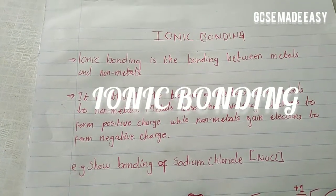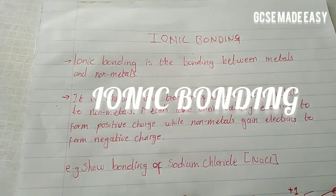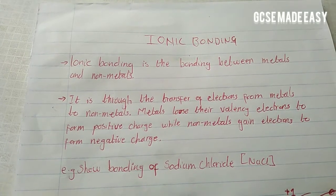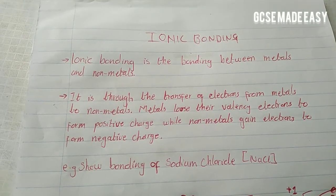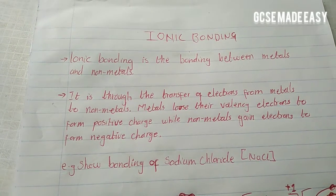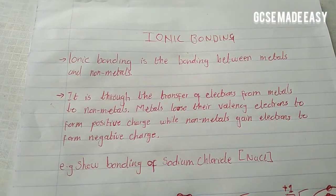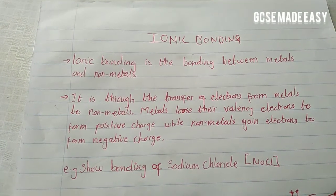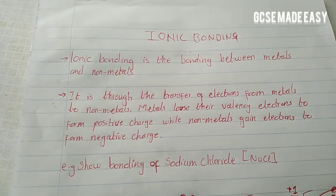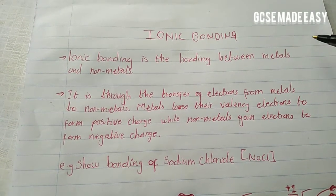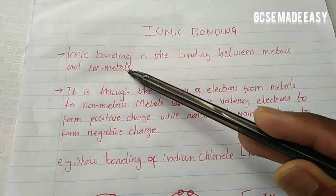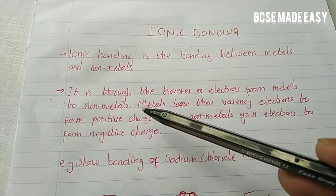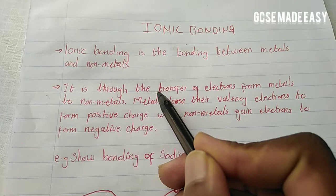Hello guys, today I want to touch on ionic bonding, which is another type of bonding. Your syllabus requires you to deal with three types of bonding: ionic bonding, covalent bonding, and metallic bonding. But in this video, we will be focusing on ionic bonding. Ionic bonding is simply the bonding between metals and nonmetals.